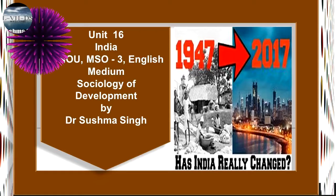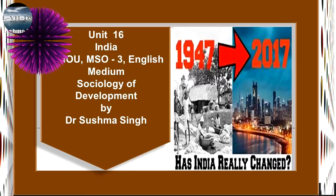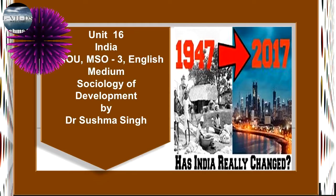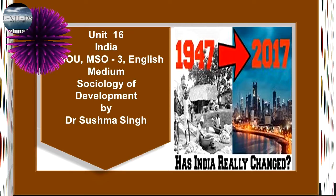In the second plan, there was a special emphasis on industrialization, and it also aimed at increasing the national income by 11% per annum by 1960–1961.